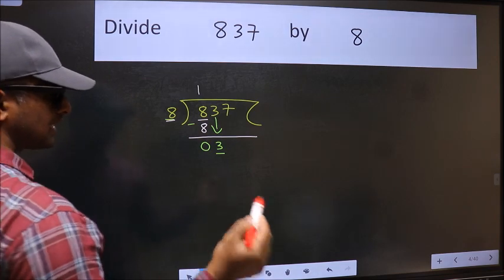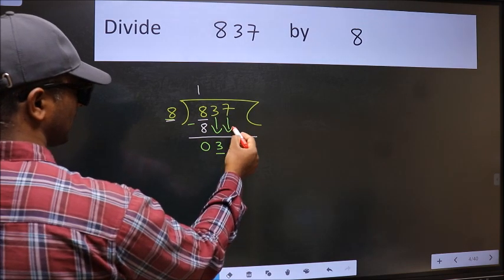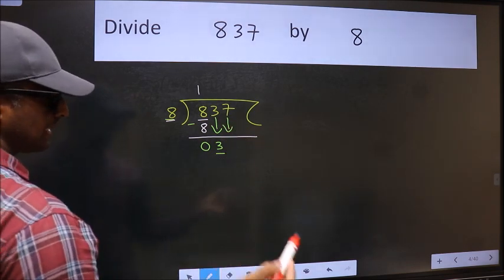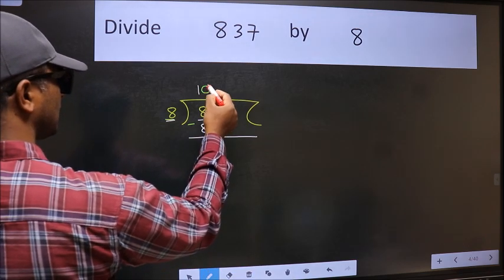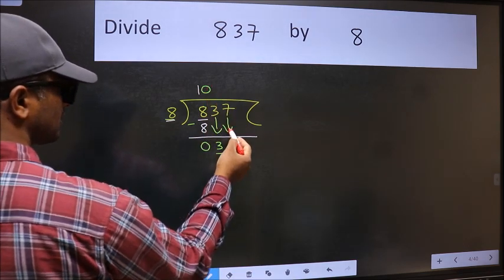So we should bring down the second number. And the rule to bring down the second number is we should put 0 here. Then only we can bring this number down.